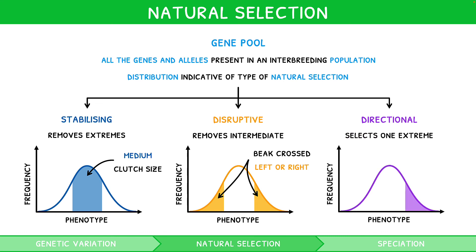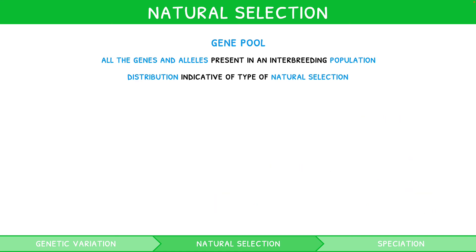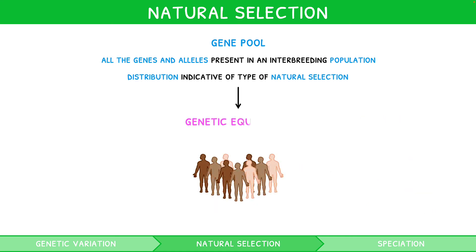For example, the Darwinian finches during El Niño were selected for longer beaks during times of drought. When discussing gene pools, an associated term arises: genetic equilibrium.